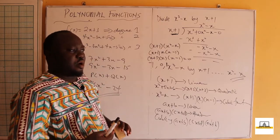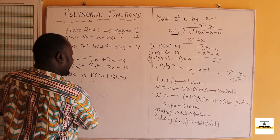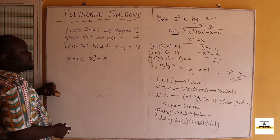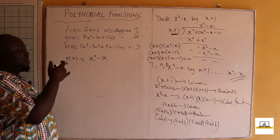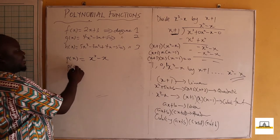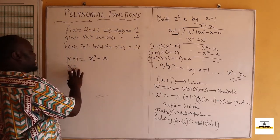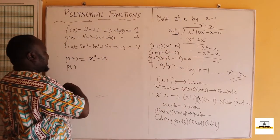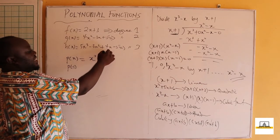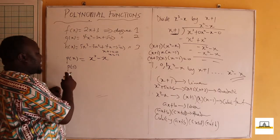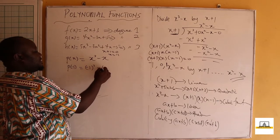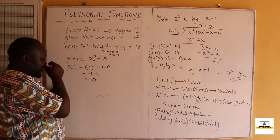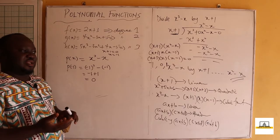Now we have the remainder theorem. For p(x) = x³ - x, if I want to find the remainder when dividing by x + 1, I set x + 1 = 0, giving x = -1, then evaluate p(-1). That gives (-1)³ - (-1) = -1 + 1 = 0. A remainder of zero confirms x + 1 is a factor — this is called the factor theorem.